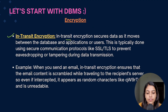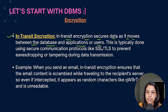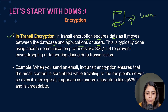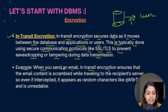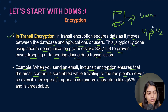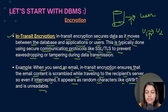In transit encryption secures data as it moves between the database and applications or users. This is typically done using secure communication protocols like SSL/TLS to prevent eavesdropping or tampering during data transmission. For example, when you send an email, in transit encryption ensures the email content is scrambled while traveling to the recipient's server. Even if intercepted, it appears as random unreadable characters.